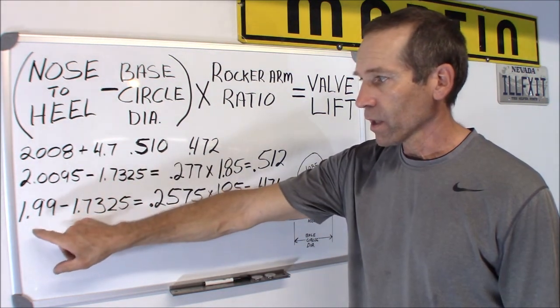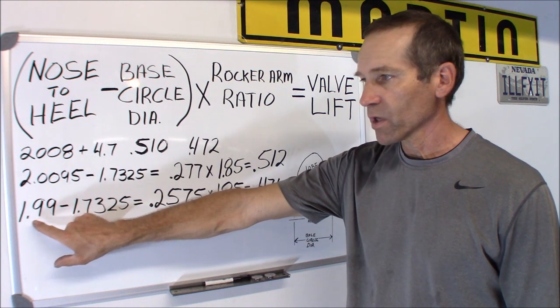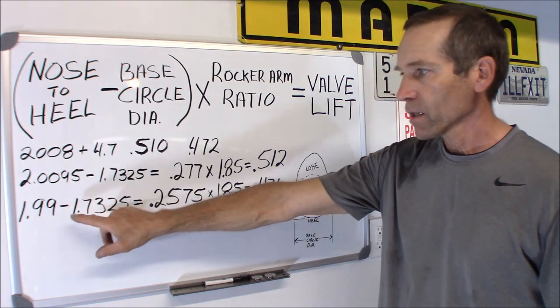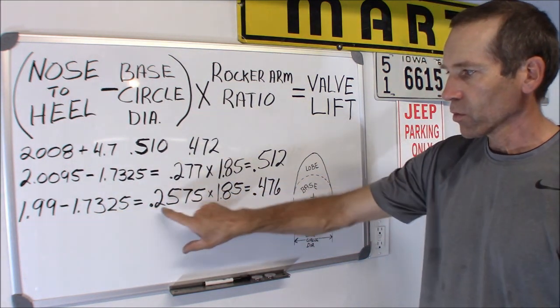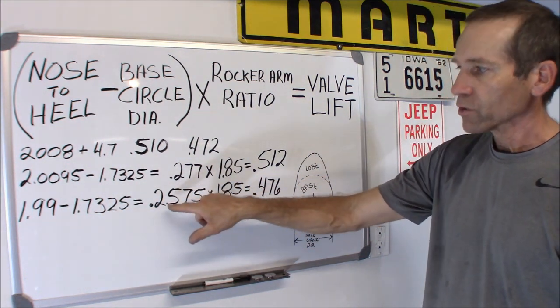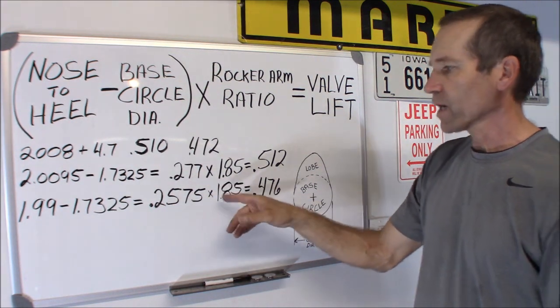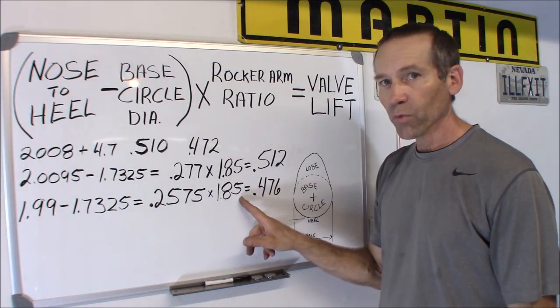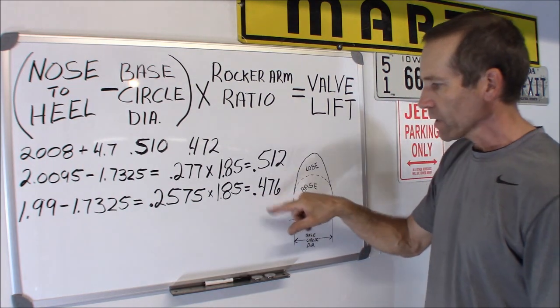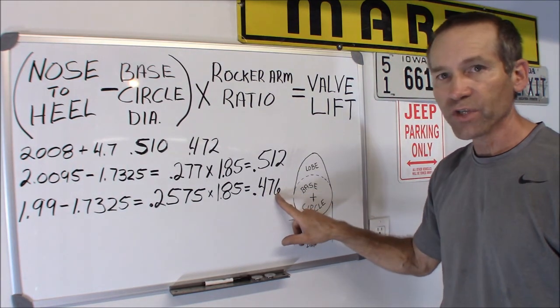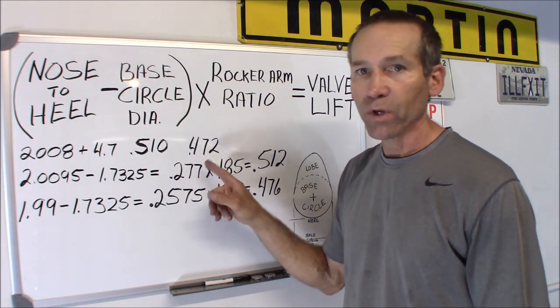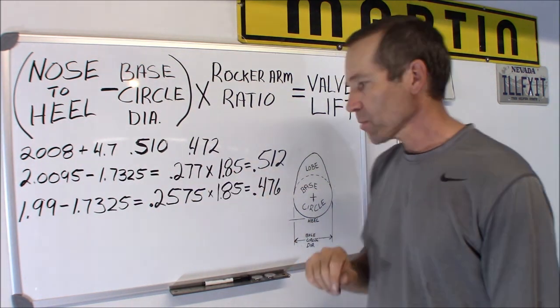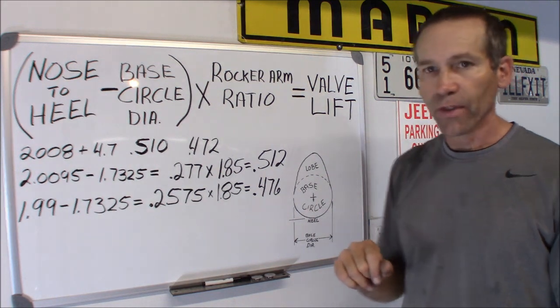Now, on the exhaust, we had the measurement of 1.99 minus the base circle equals 0.2575 times the rocker arm ratio of 1.85 to 1. And that equals a 0.476. And the advertised lift on that is a 0.472. So, I'm off by about 0.004 on that one.